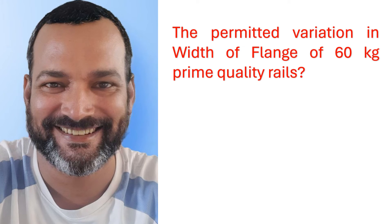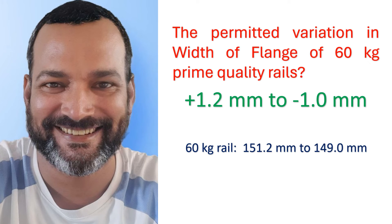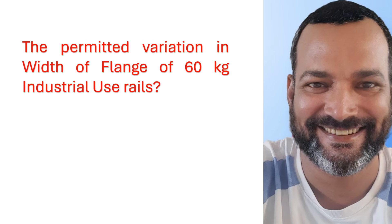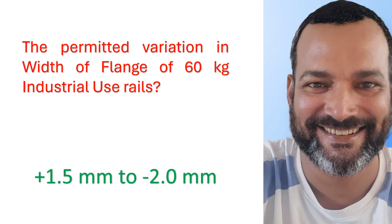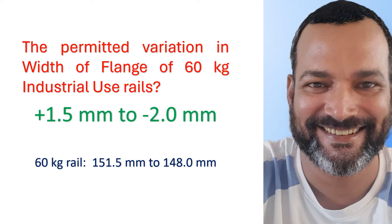The permitted variation in width of flange of 60 kg prime quality rail is +1.2 millimeter to -1.0 millimeter. For the 60 kg rail the range will be 151.2 mm to 149.0 mm. The permitted variation in width of flange of 60 kg industrial use rail is +1.5 millimeter to -2.0 millimeter, giving a range of 151.5 mm to 148.0 mm.